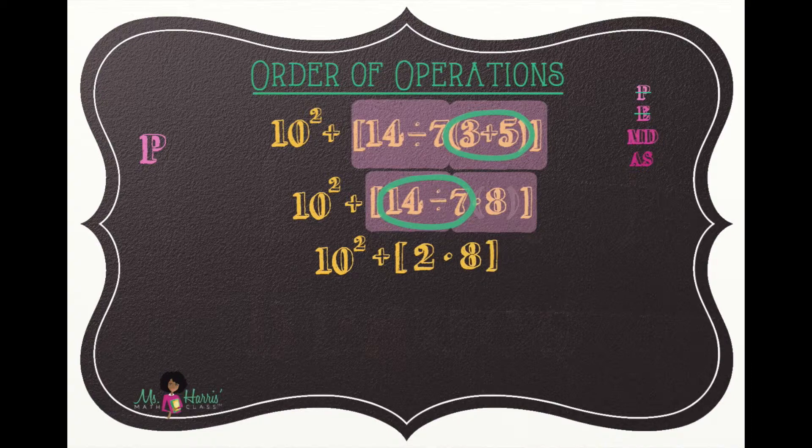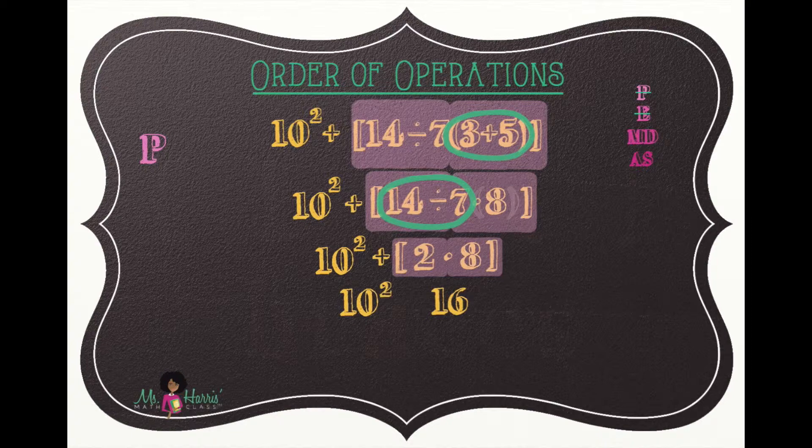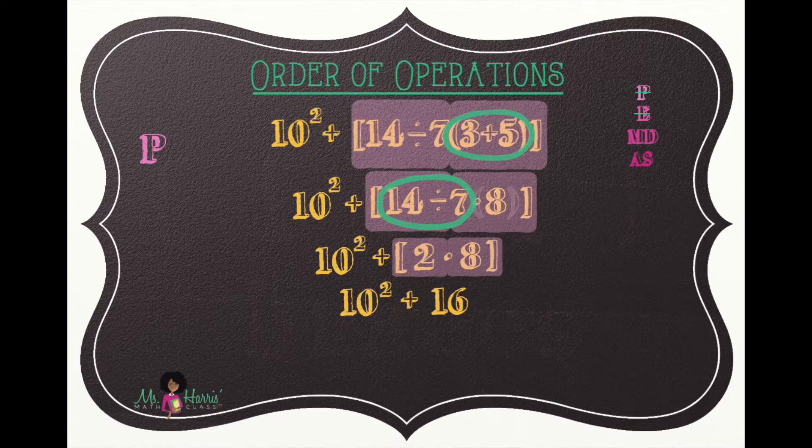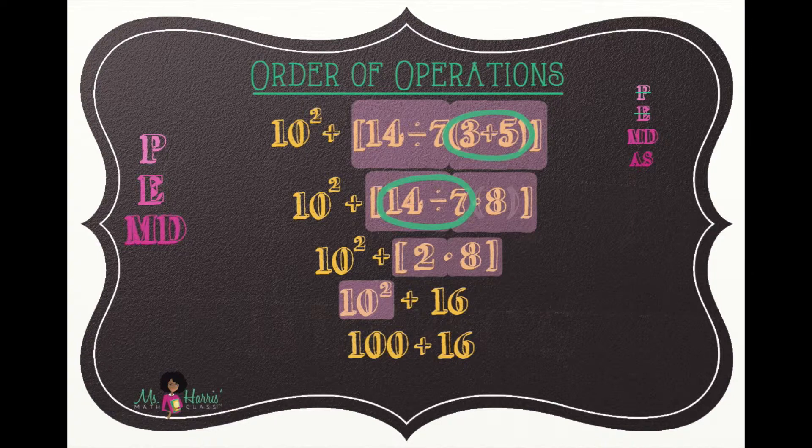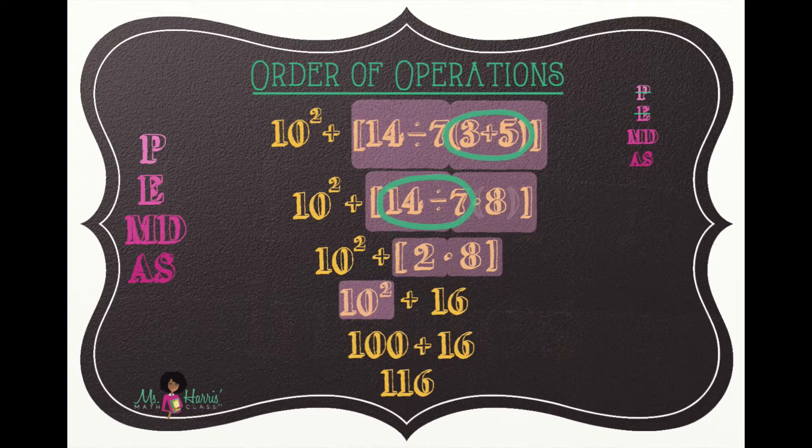And then highlight 2 times 8, which is 16, and bring down the remaining numbers and operations. We'll then go back to our original PEMDAS and move to exponents. So we highlight 10 squared, which is 100, and bring down the remaining numbers and operation. We skip past multiplication and division to addition and subtraction. 100 plus 16 is 116.